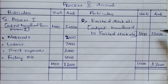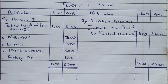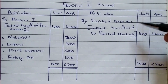This is a simple process accounting problem. The raw materials passed through Process 1 and Process 2 to become the finished product. The output of Process 1 becomes the input of Process 2. When Process 2 is completed, the output is transferred to the finished stock account. Thank you.